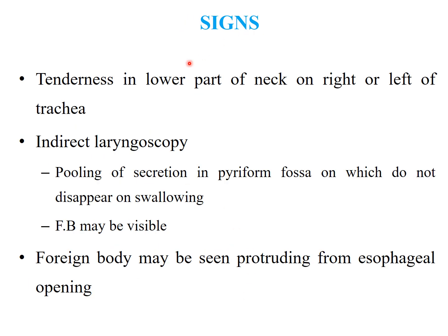Signs include tenderness in the lower part of the neck on the right or left side of the trachea. On indirect laryngoscopy or mirror examination, pooling of secretions may be visible in the piriform fossa or post-cricoid region, and it usually does not disappear on swallowing. The foreign body may be visible in this area or may be seen protruding from the esophageal opening.